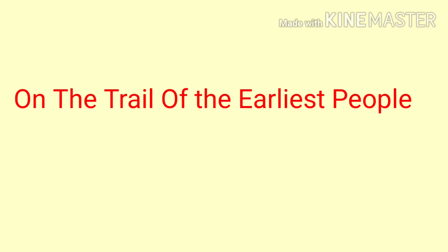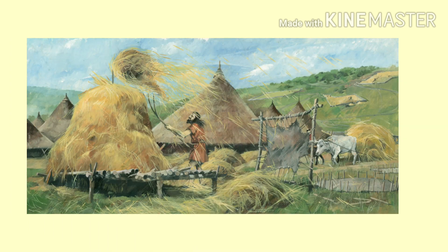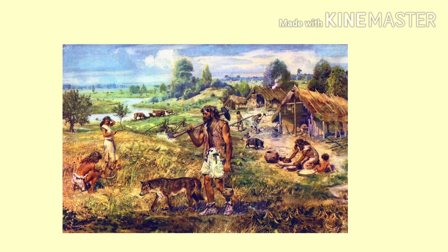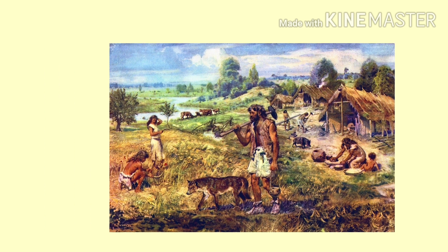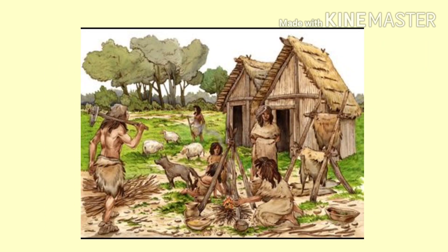On the trail of the earliest people — learning goals: life of hunter-gatherers, the Stone Age, climate change, discovery of fire. The primitive man was a hunter-gatherer. He used to hunt animals and gather fruits and other plant produce for food. The early man did not live at one place, but used to move from one place to another. This means that the early man lived a nomadic life.